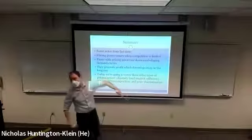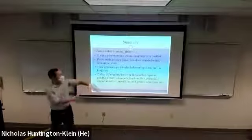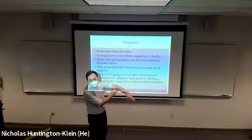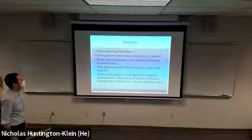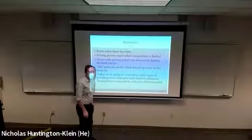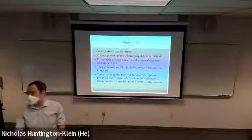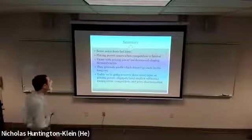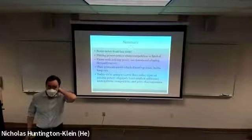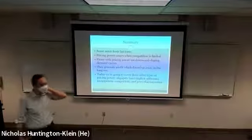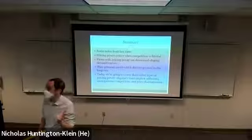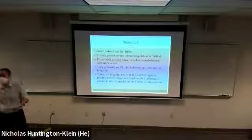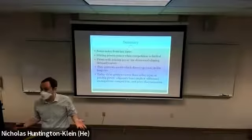But the firm with pricing power has a downward sloping demand curve. It means that they can choose: do I want to sell a high price, low quantity, or a low price, high quantity? It means they have the ability to generate profit that doesn't go away in the long run, as opposed to a competitive market where we'd expect the profits to go to zero. But we also only really talked about monopolies, where there's really only one firm in the market. This is clearly not the only way in which pricing power can come up.